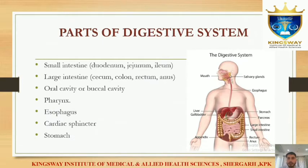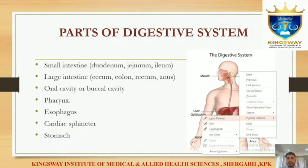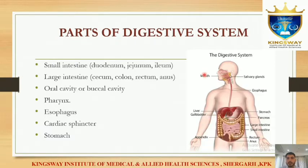Parts of the digestive system: first we have the mouth. In the mouth there are salivary glands. Then we have the esophagus, stomach, small intestine, and large intestine. These are the parts of the digestive system.